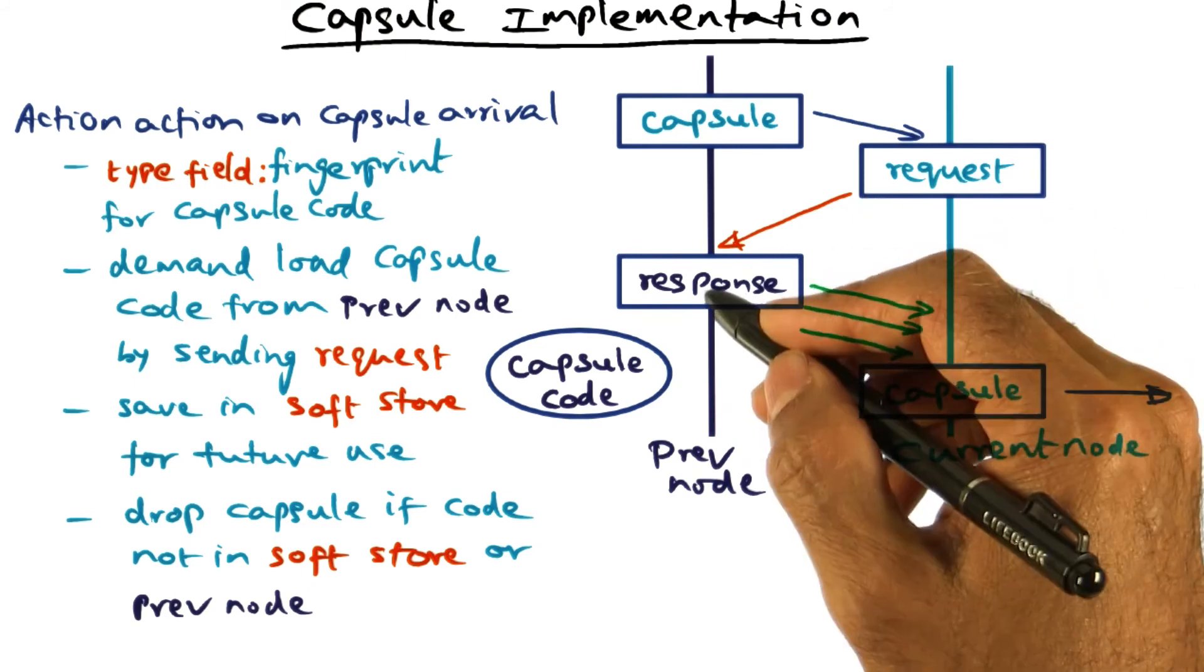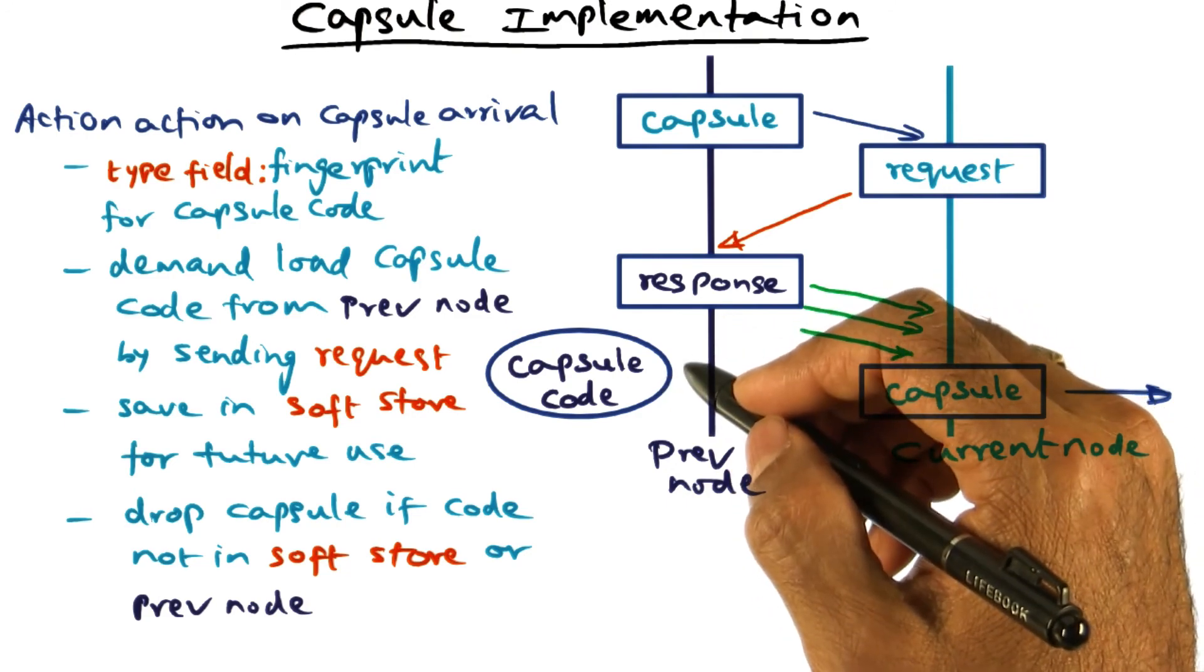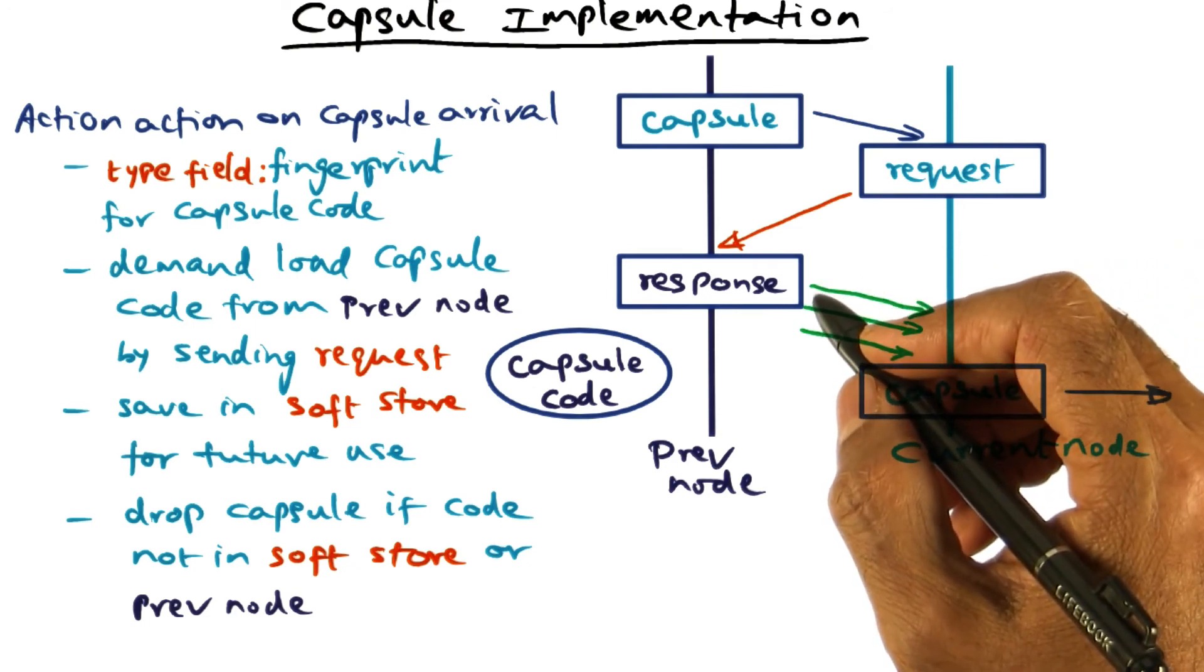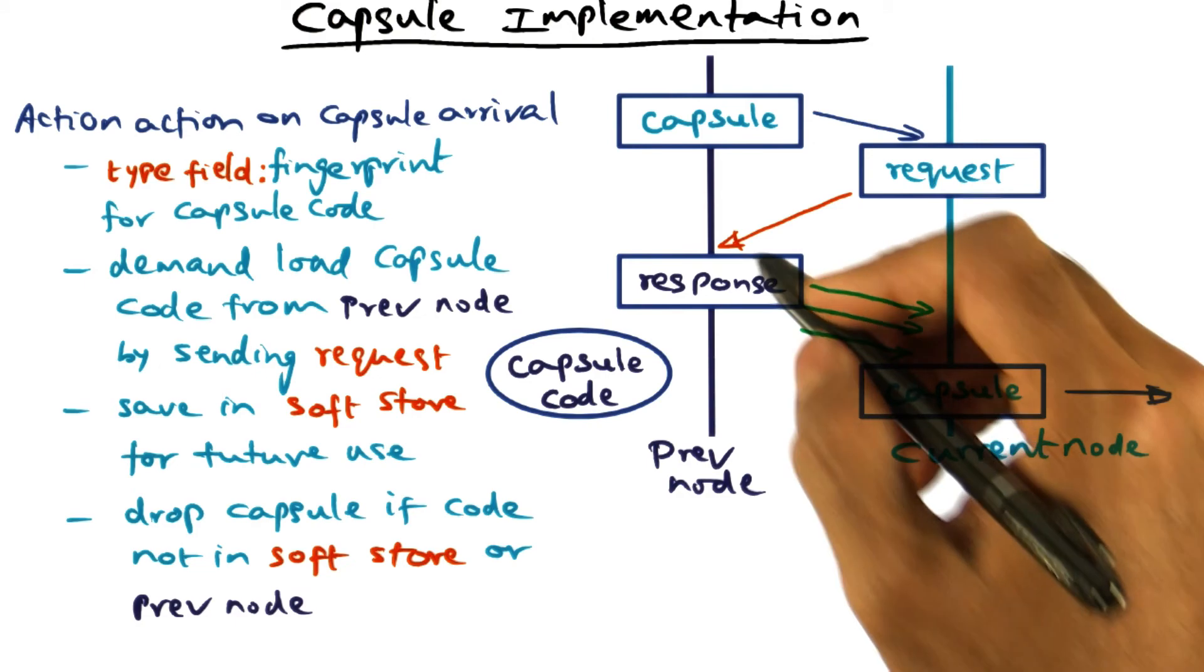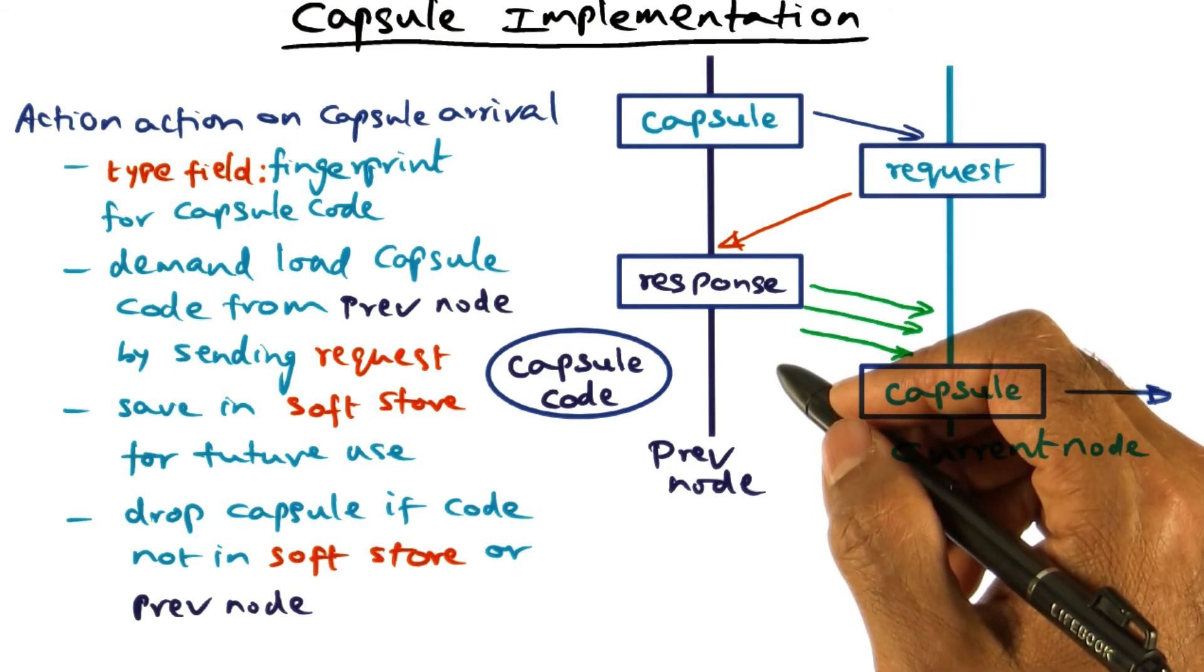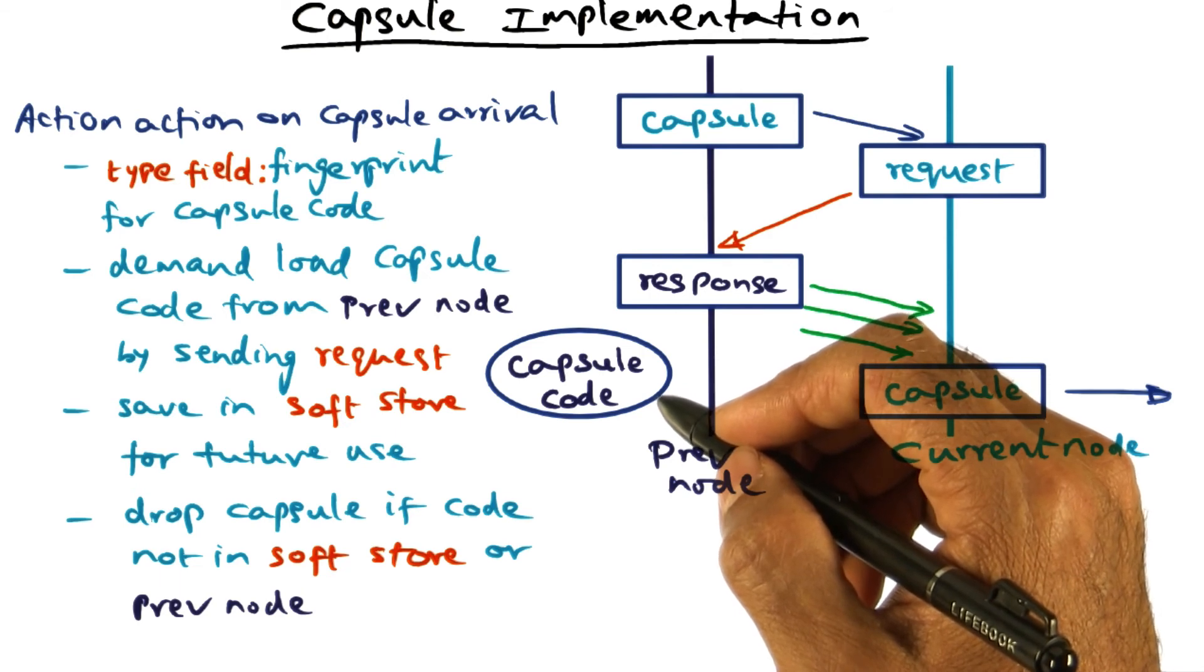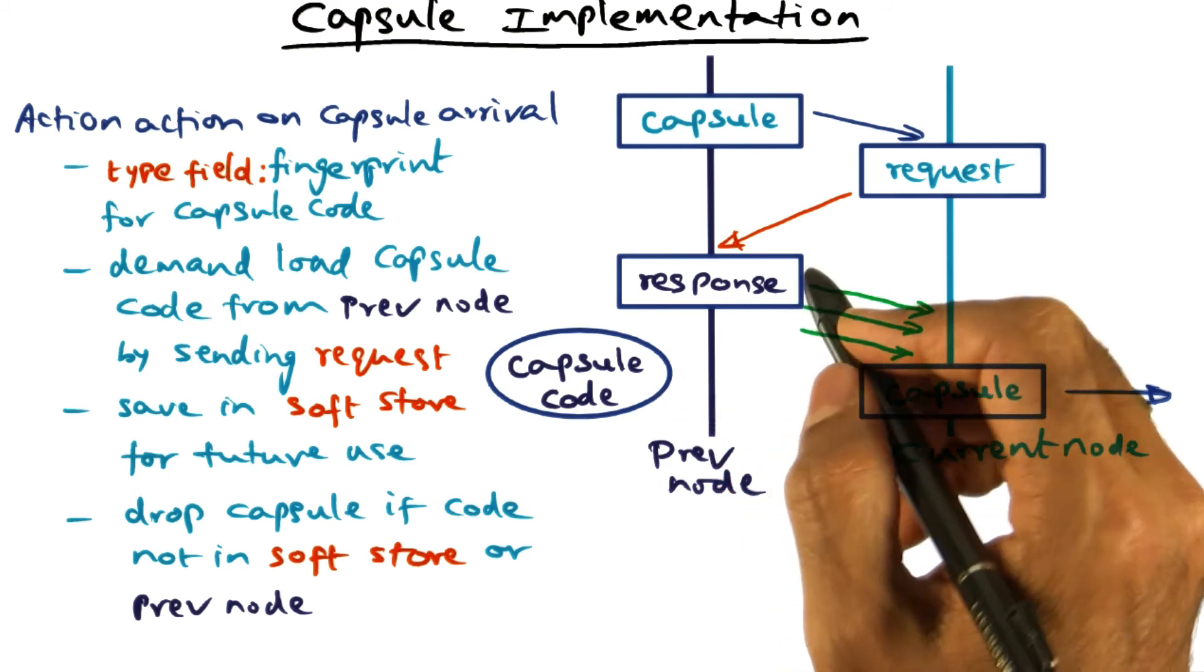Now is it likely that when we reach into the previous node, that node does not have the code for it? Because after all, it did process this capsule and send this capsule on to me. It can happen, because the soft store is limited. Every router node has only a finite capacity, and all of its capacity is not going to give to a single network flow. It is going to give only a part of its storage for the network flow that is corresponding to a particular capsule type. And therefore, I have to live within my means, so the capsule code may have to throw away stuff every once in a while if it is storing more than what its capacity is in the soft store. So it is possible that the code that it originally stored in the soft store, it had to replace it, because it is like a cache. And therefore, it may have replaced it, and therefore, it may not have it.